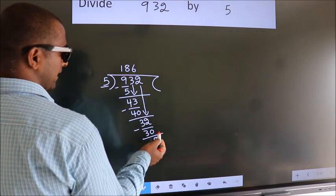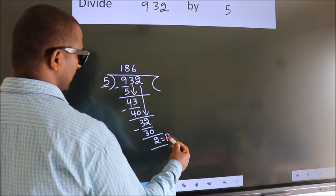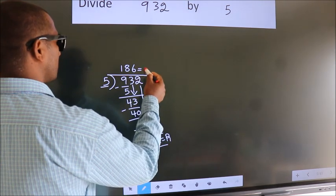No more numbers to bring it down. So we stop here. This is our remainder. This is our quotient.